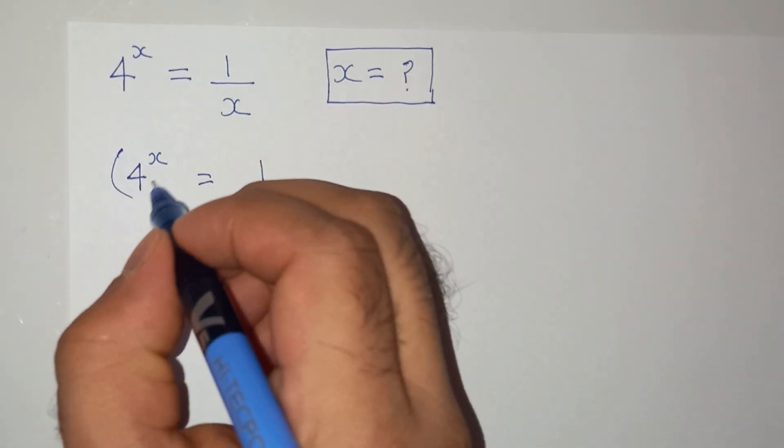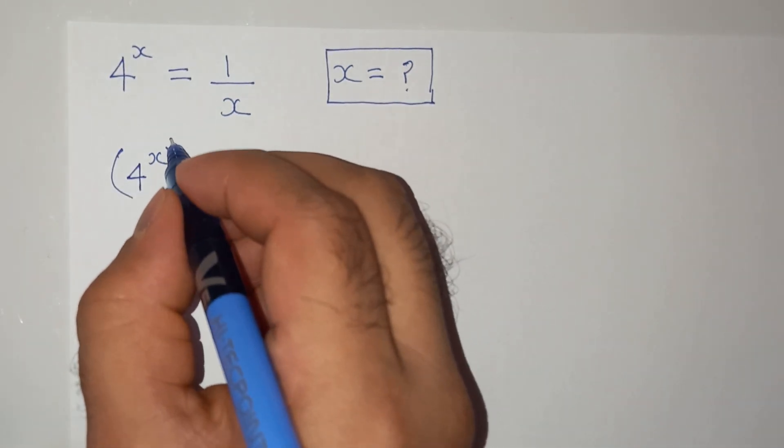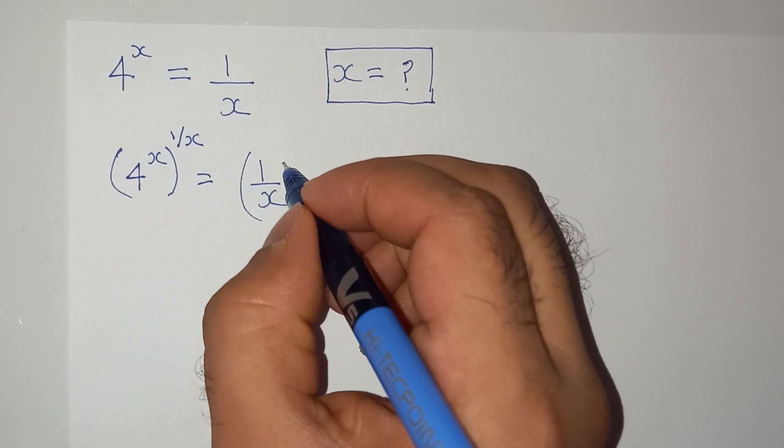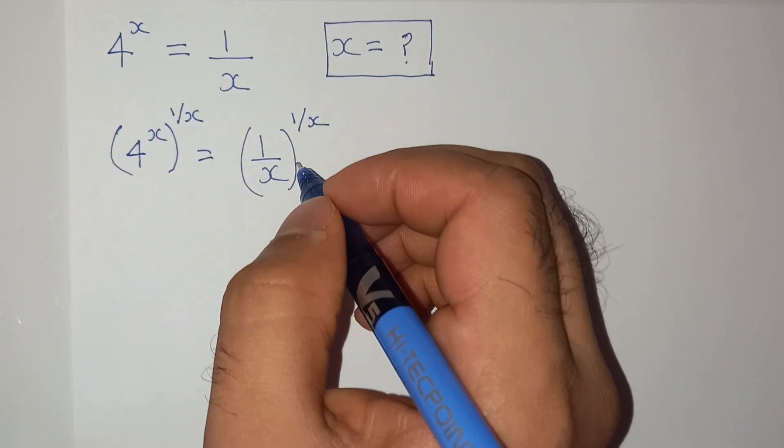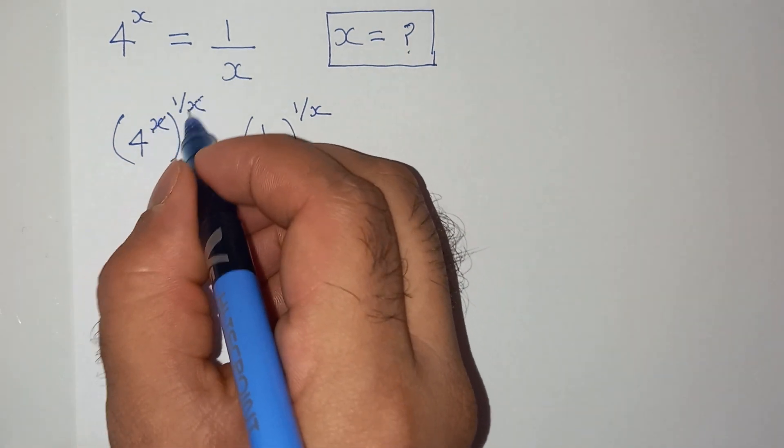Now I am going to raise both sides to the power 1/x on the left hand side and on the right hand side. Right? Now this x and x will cancel.